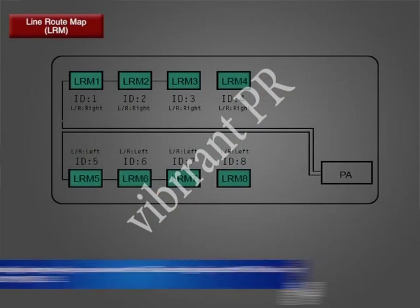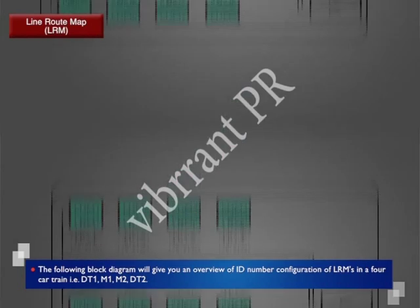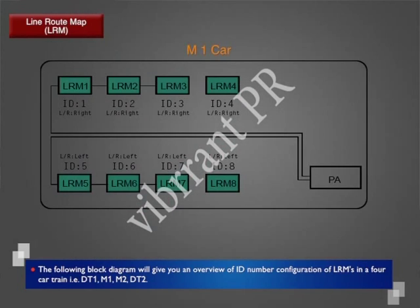The following block diagram will give you an overview of the ID number configuration of LRMs in a 4-car train, that is: DT1 car, M1 car, M2 car, and DT2 car.